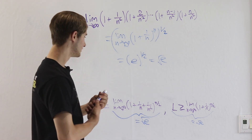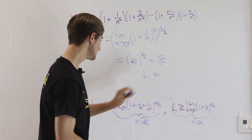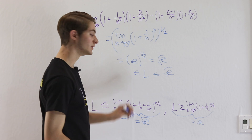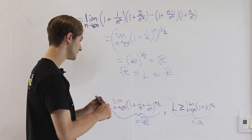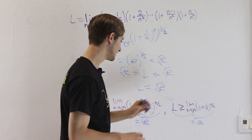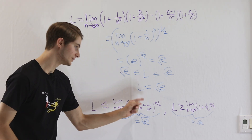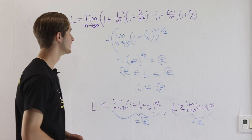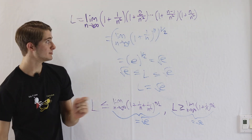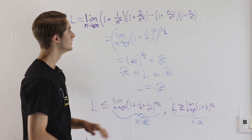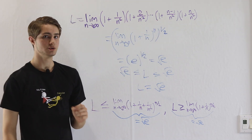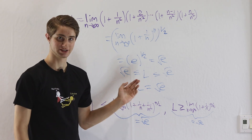We know L is less than or equal to the first limit, which equals the square root of e. We also know L is greater than or equal to the second limit, which also equals the square root of e. So L must be between square root of e and square root of e — we've conclusively established that our limit equals the square root of e. The key insight was seeing the original limit looked similar to 1 plus 1 over n to the n, and multiplying pairs of factors to get it into a form easier to evaluate.